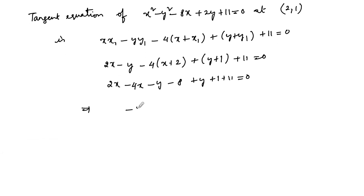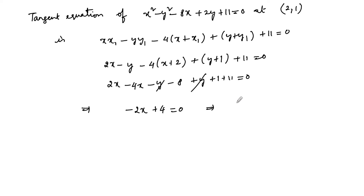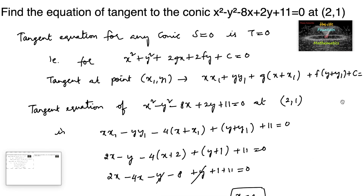Simplifying: 2x minus 4x gives minus 2x; the y terms cancel; and minus 8 plus 1 plus 11 equals plus 4, which gives minus 2x plus 4 equals 0, so x equals 2. Therefore, x equals 2 is the required equation of the tangent for the given conic at (2, 1).